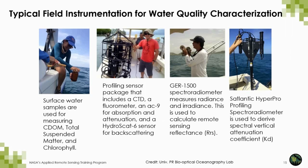Let's talk about some typical field instrumentation for water quality characterization. Usually when measuring CDOM, total suspended matter, or chlorophyll, you collect water samples at the surface or sometimes at different depths, then perform chemical analysis for all these different parameters. There are also a number of profiling packages, usually called optical rosettes, which typically include a CTD — measuring conductivity, temperature, and density — a fluorometer, and other instruments like the AC9 for absorption and attenuation, as well as instruments for characterizing backscattering from suspended matter.